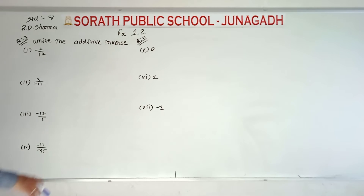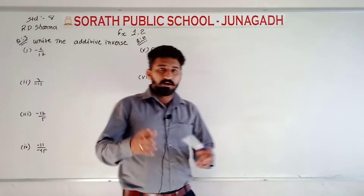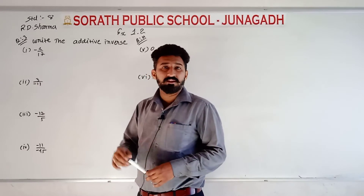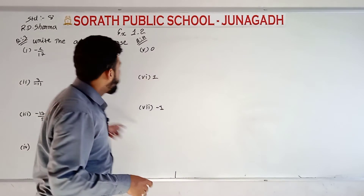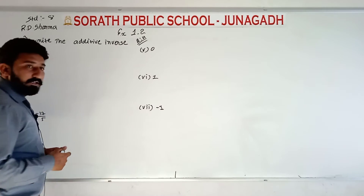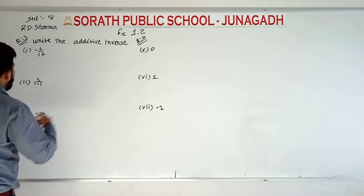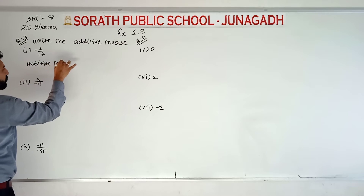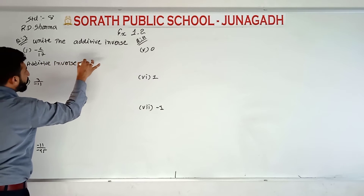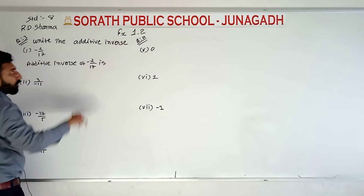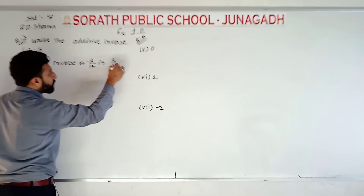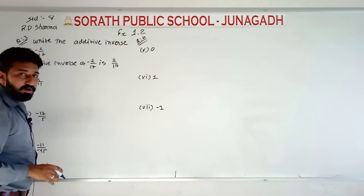Now question number 3 and question number 4 are the same type: write the additive inverse. We know what the additive inverse is. For example, the additive inverse of minus 2 upon 7 is 2 upon 7 — we write the opposite sign. Minus becomes plus, or plus becomes minus.